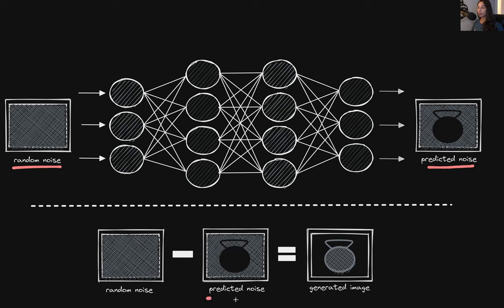Once we subtract the predicted noise from the model — depicted here with all of the gray — from the random noise in the input image, we get a new generated image made up of all the data the model didn't identify as noise, which is going to look like a piece of gym equipment. In practice, the type of neural network used to do this process is called UNET, which we were introduced to in an earlier lesson. This is the main component of stable diffusion responsible for actually generating images, and we'll continue expanding on the technical details in a later lesson.